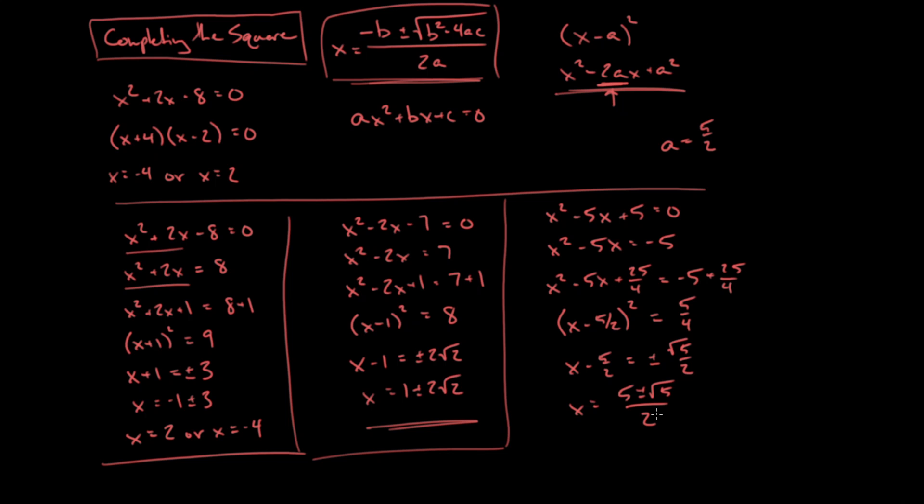So completing the square is just a process you can go through each time to solve a quadratic equation if you don't want to factor or use the quadratic formula: isolate the variable terms, find the number to add to complete a perfect square, then square root and solve.